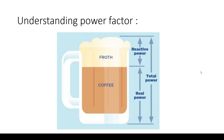Imagine a cup of cappuccino divided between coffee liquid and froth. The coffee liquid is the real power — the useful part of the power being used by the system to perform the required task. The froth is the reactive power, which is the part of energy that is being lost. The sum of real power plus reactive power is the total apparent power. So this full cup represents the total apparent power. The power factor is the ratio of the real power to the apparent power.